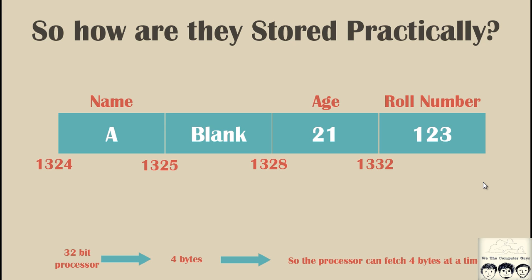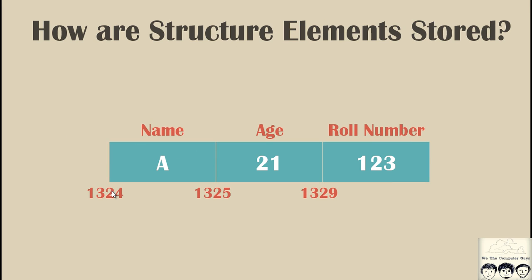So you might say, why not remove this blank space and put the age over here? I'll take you back to the previous slide. If it was this scenario, what will happen? If we have a 32-bit processor, we will pick from 1324 to 1328, so that will be somewhere in between, and you will have the name and a certain portion of the age.